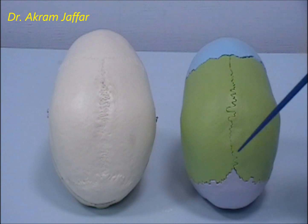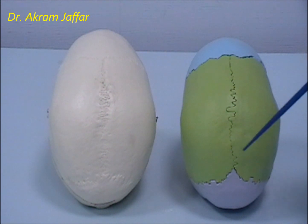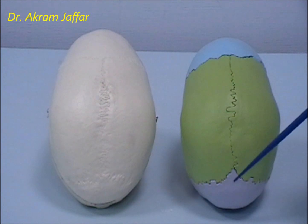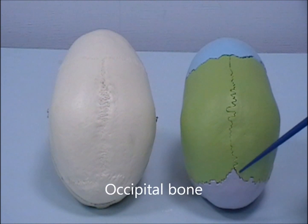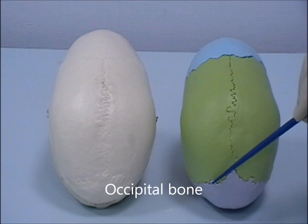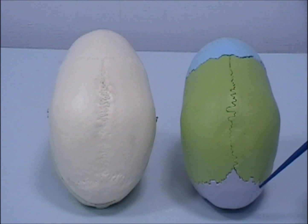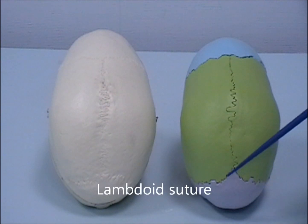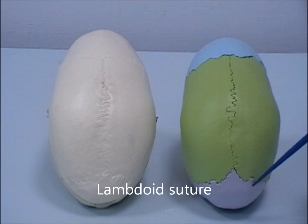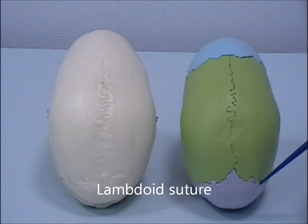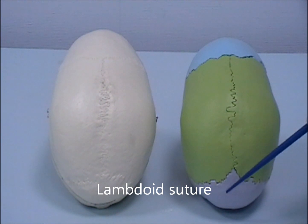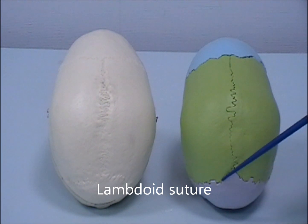The two parietal bones articulate with the occipital bone at an inverted Y-shaped suture which looks like the letter lambda. The arrangement looks like the letter lambda, and that is why this suture between the two parietal bones and the occipital bone is called the lambdoid suture.